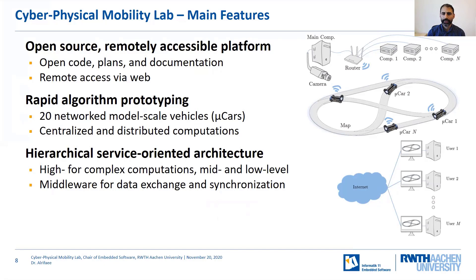In the lab, it is possible to rapidly prototype algorithms. For this, we offer 20 networked model-scale vehicles — we call them NV-cars — and a computation platform. The NV-cars can be seamlessly extended by unlimited simulated vehicles. With the computation platform, it is possible to run software centralized on a main computer or distributed on different computers associated to the vehicles. In the lab, we use an innovative software architecture: a hierarchical, service-oriented architecture. Service-oriented architectures are modular and easily updatable. We divide the system into three levels — a high level for complex computations, a mid level, and a low level. Our middleware allows distributed data exchange and synchronization of data.